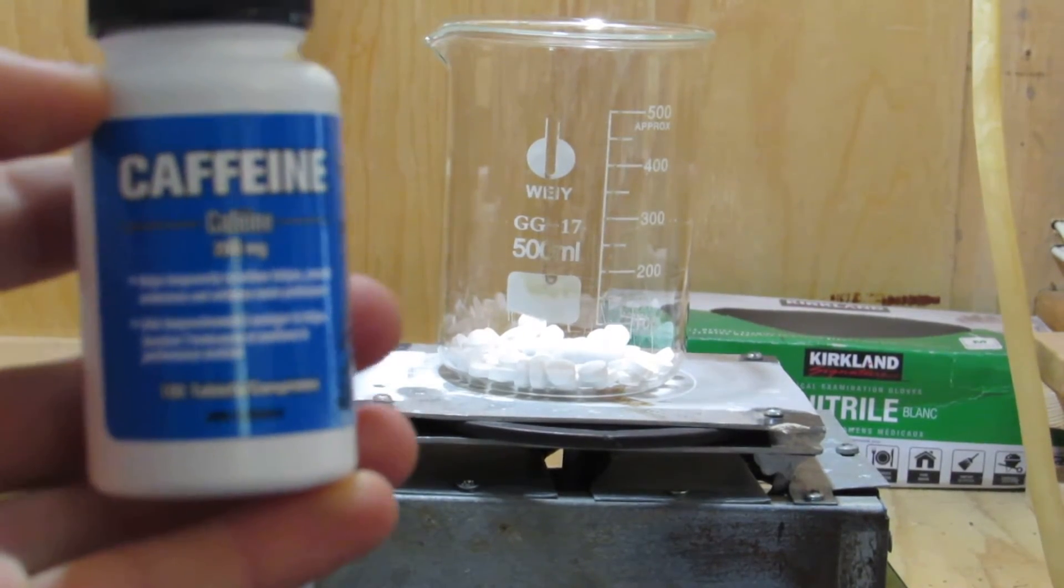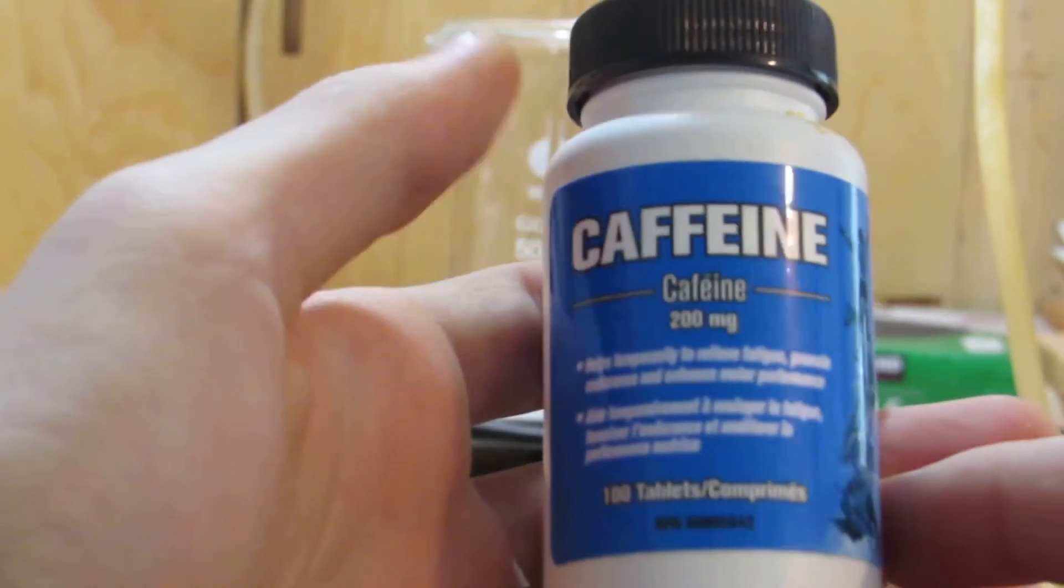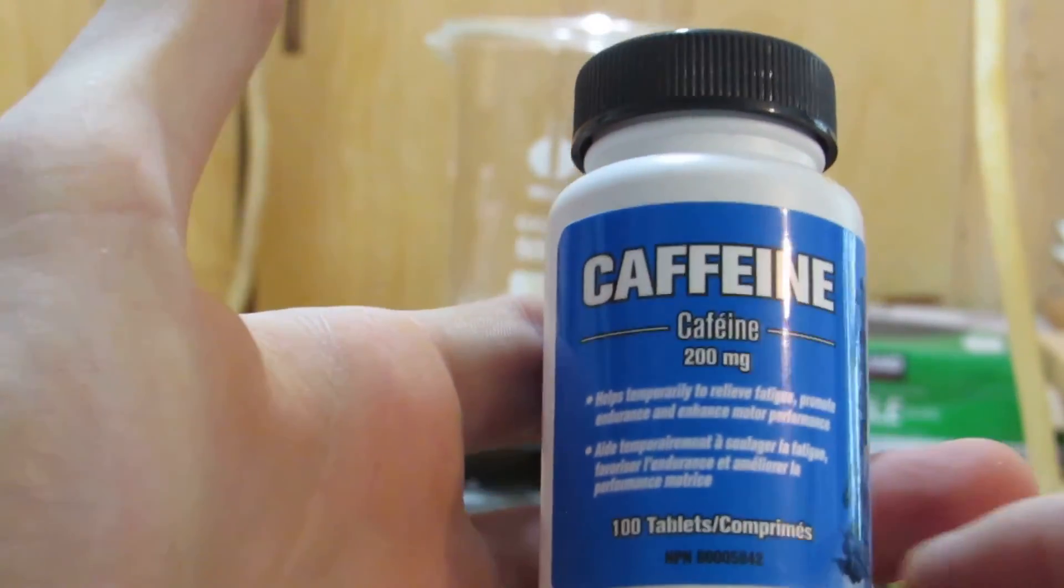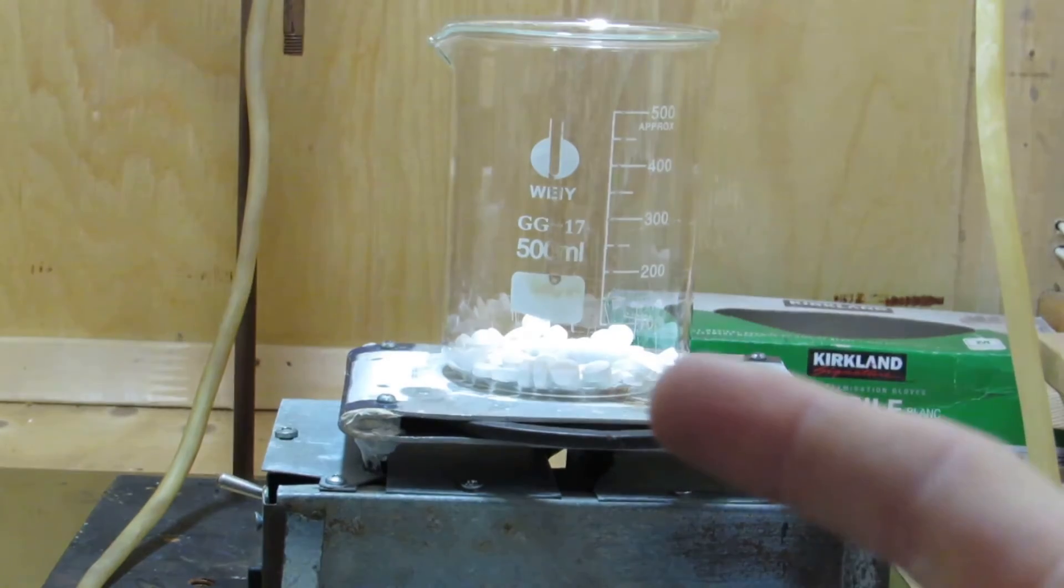Hey guys, welcome back to another video. Today we'll be quickly extracting some pure caffeine from caffeine pills. 100 caffeine pills can be purchased for around ten dollars, and each pill contains 200 milligrams of caffeine, so these are a very cheap source of caffeine.